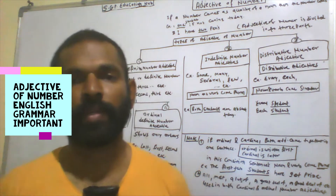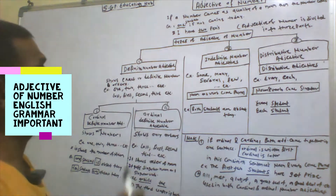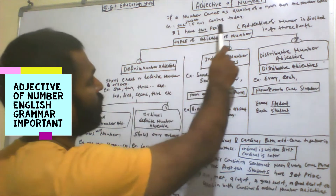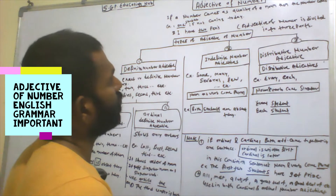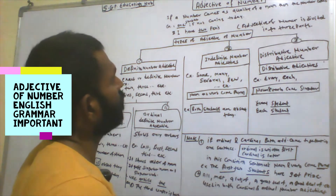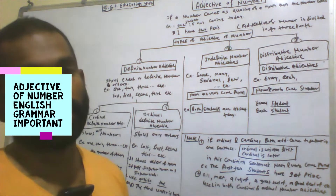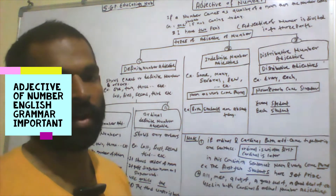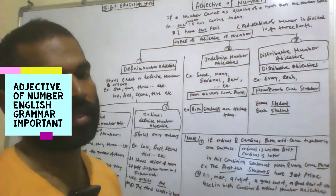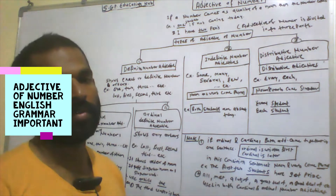Let's go on to the topic. The topic is Adjective of Number. When a number comes as a quality of a noun, then that number is called an Adjective of Number. When a number appears in a sentence as a quality of a noun, then the number is called Adjective of Number.